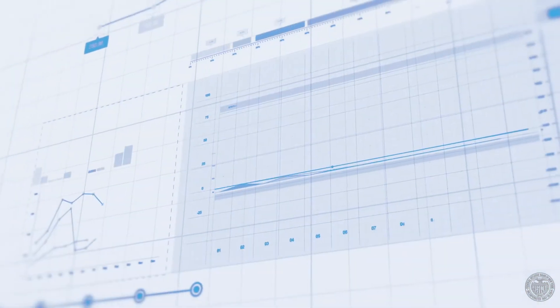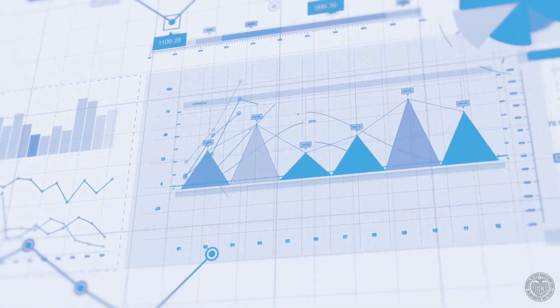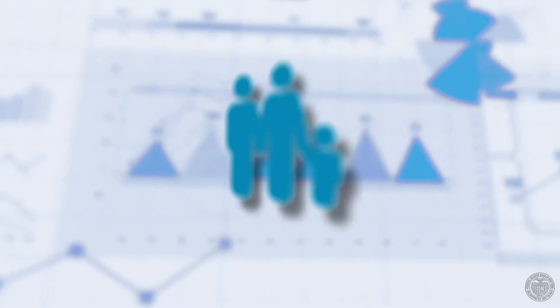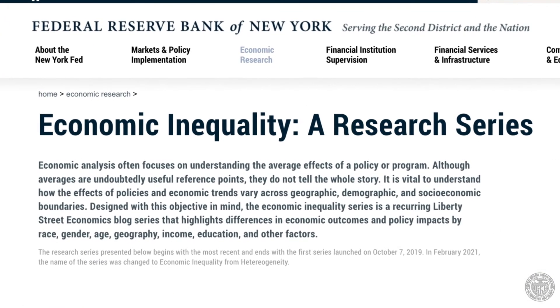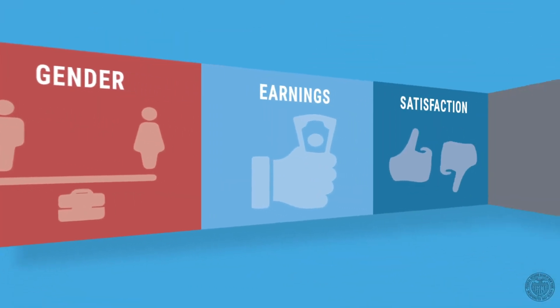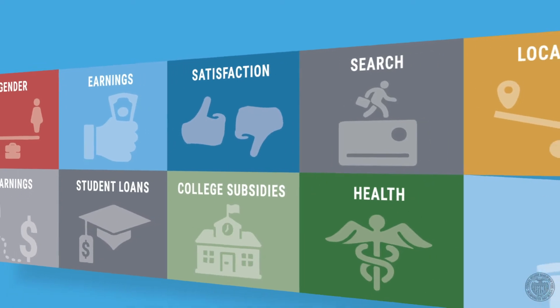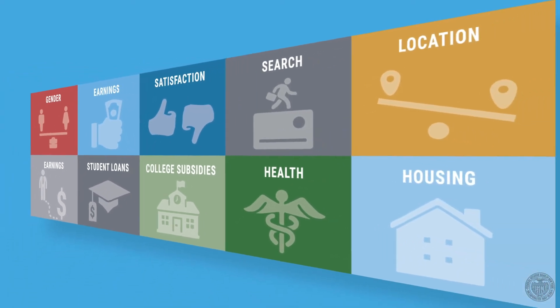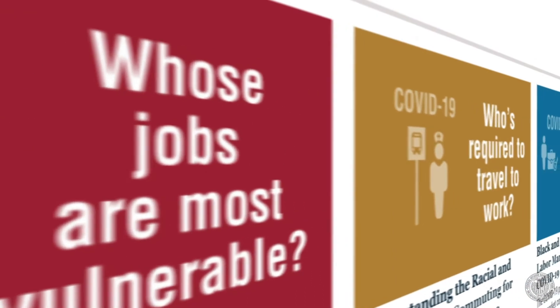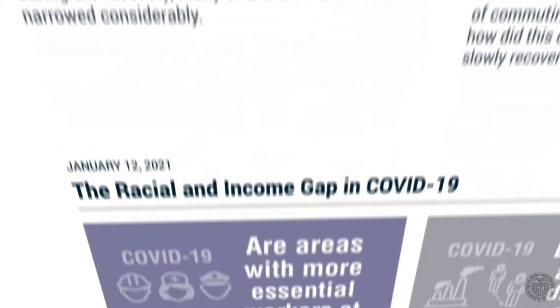To better understand what contributes to economic inequality, it is vital to understand how the effects of policies and economic trends differ across geographic, demographic, and socioeconomic boundaries. The Economic Inequality Series from the New York Fed highlights the differences in economic outcomes and policy impacts by race, gender, age, geography, income, education, and other factors.